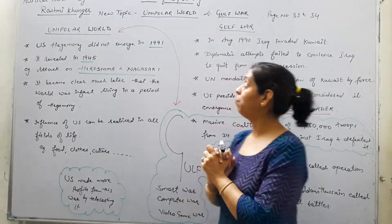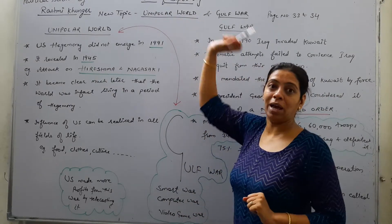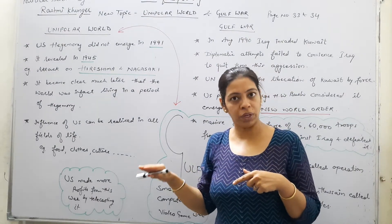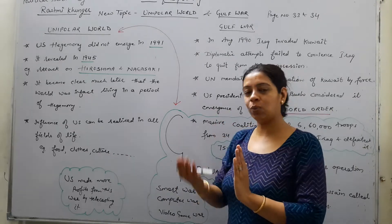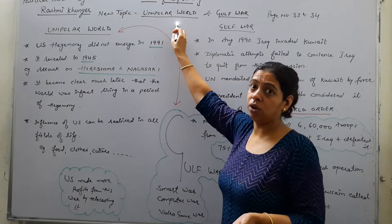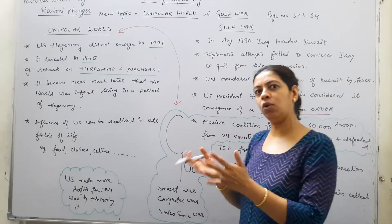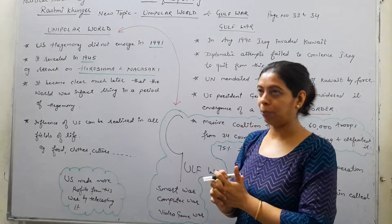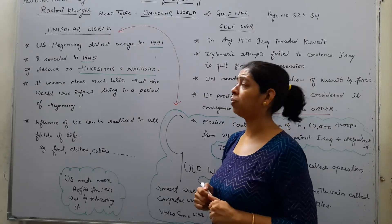Why is this being done? The name of the chapter is 'End of Bipolarity,' where we discuss the disintegration of the Soviet Union. These topics are closely connected — when the Soviet Union disintegrated, unipolar world and Gulf War became related. So let's come to the first topic: unipolar world and US hegemony.